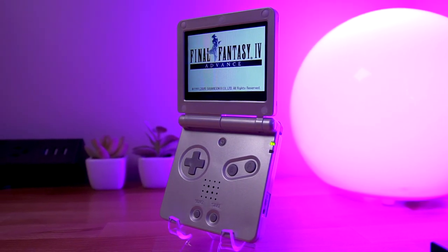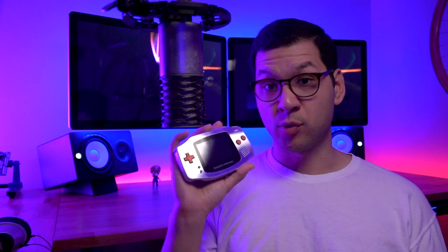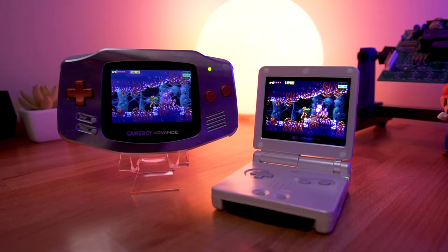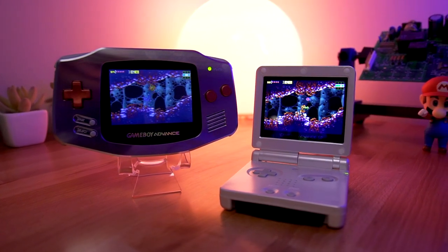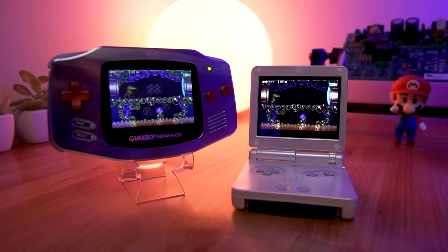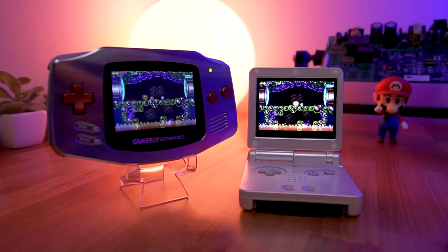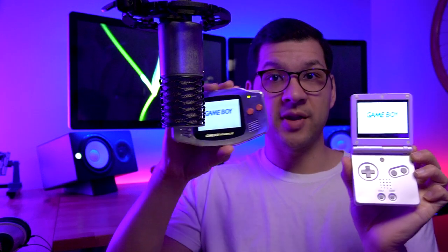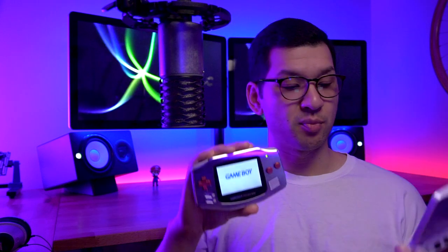I have my modified Game Boy Advance original with the AGS-101 screen, and just for comparison, I'm going to show this in some B-roll. That's the AGS-001 and this is the IPS screen. Even here, in the normal brightness setting, you can tell there's quite a bit of difference.